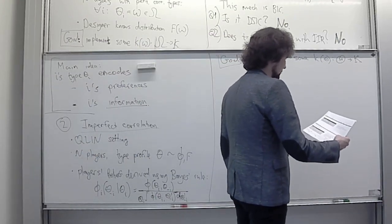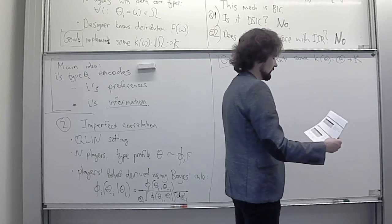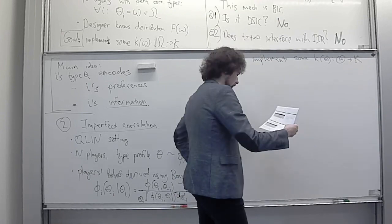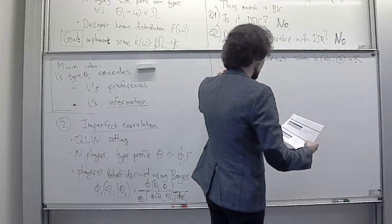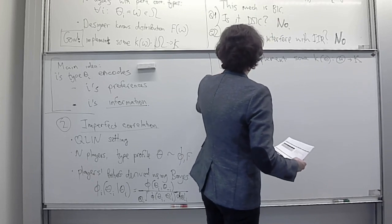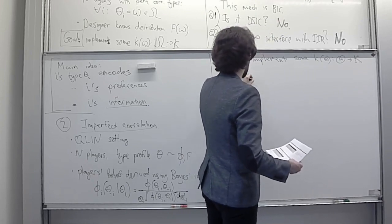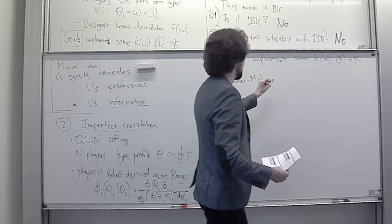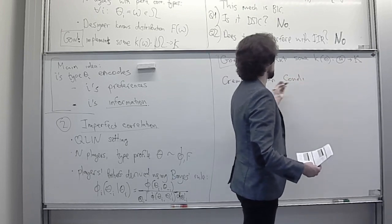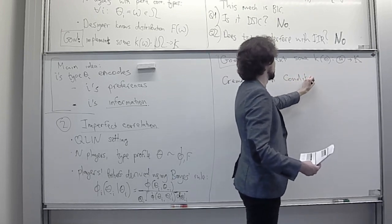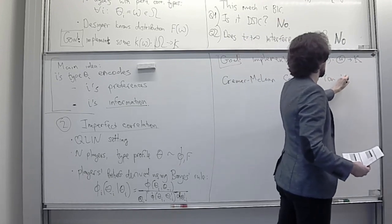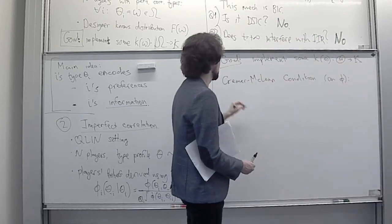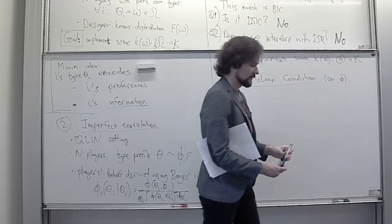The actual condition is slightly stronger than uniqueness of beliefs. I will state it in a not fully formal way. The whole mechanism and this condition in particular is due to Cramér and McLean in their 1988 paper, so I'll call this the Cramér-McLean condition. We will say that our distribution of types phi satisfies the Cramér-McLean condition if, for any player i and any type theta_i of this player...